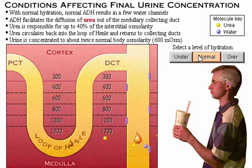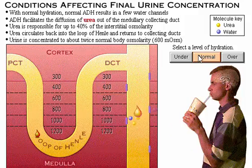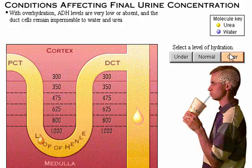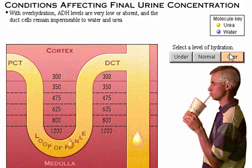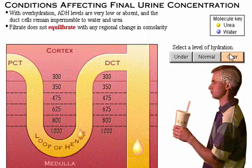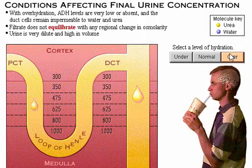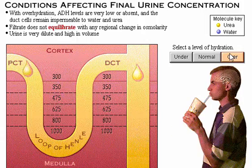With overhydration, ADH levels are very low or absent and the duct cells remain relatively impermeable to water and urea. The reduction in urea permeability decreases the medullary interstitial osmotic gradient, reducing the water-drawing power of the interstitium. As the filtrate passes through the lumen of the medullary collecting duct, it does not equilibrate with any regional change in osmolarity and therefore remains unmodified. The filtrate drop remains the same size and color as it descends through the duct. The final urine, which is dilute and high in volume, may have an osmolarity as low as 100 milliosmoles.